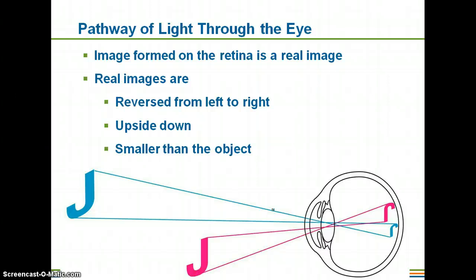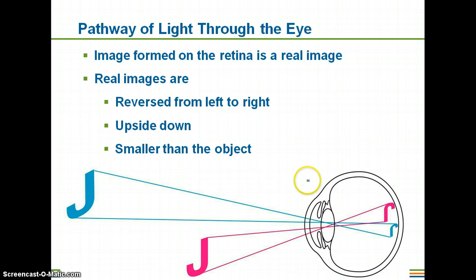When the light is focused onto the retina, it's projecting a real image, and a real image is not going to be right side up — it's actually going to be reversed from left to right. So if you're looking at the letter J, the image projected onto your retina, because of the refraction of light as it travels through the lens, is going to be reversed from left to right, upside down, and of course much smaller than the actual object.